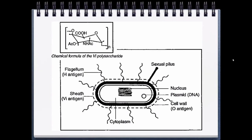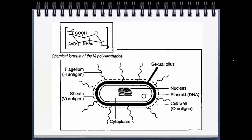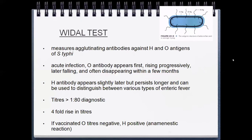In the Widal test, we test three antigens: Vi antigen on the outer sheath, H antigen on the flagellum, and O antigen on the cell wall. In acute infection, O antibodies appear first and also disappear first — within a few months. H antigen antibodies appear later, persist longer, and are serovar-specific, so they can differentiate between different types of enteric fever.